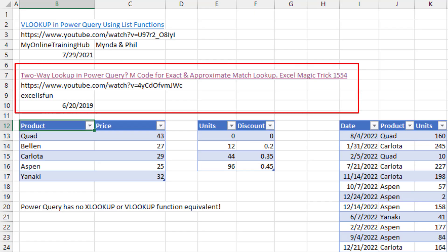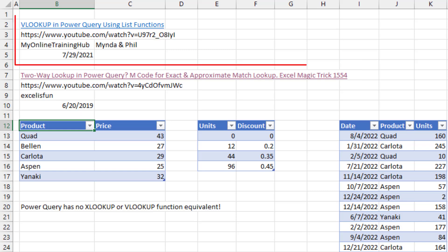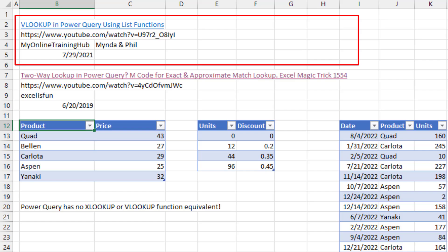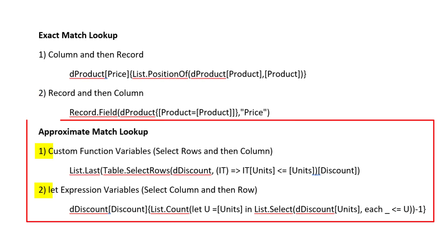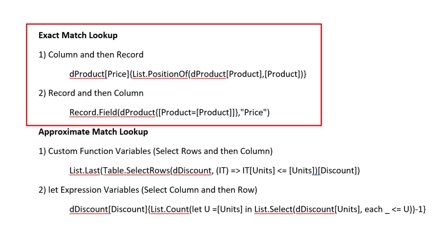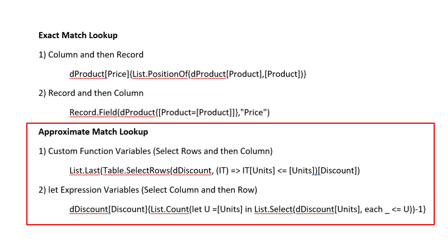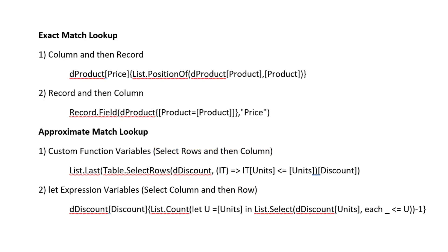We want to look at two formulas for exact match lookup and for approximate match lookup. We'll see how the formula for exact match looks up the column then the record, and we'll also do it looking up the record then the column. For approximate match lookup, we'll see how to use a custom function variable and a let expression variable. Then I want to hear in the comments which one you prefer and why.